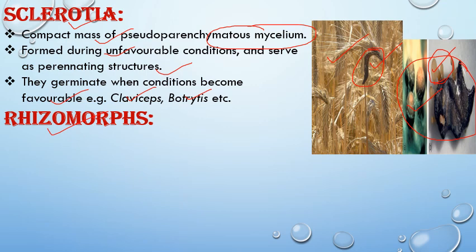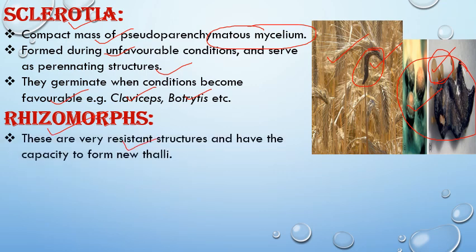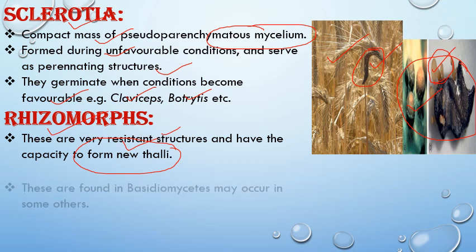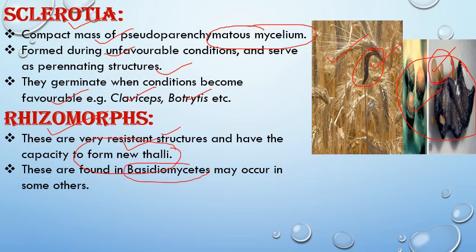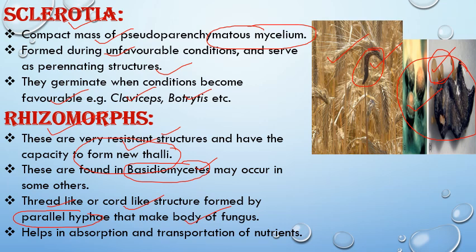The next structures are rhizomorphs, which are cord-like or thread-like structures formed by parallel hyphae. Their main function is in the absorption and transfer of nutrients from the substratum. These are very resistant structures with the capacity to form new thalli. They are found in Basidiomycetes, the most advanced class of fungi, and may occur in some other fungi as well.